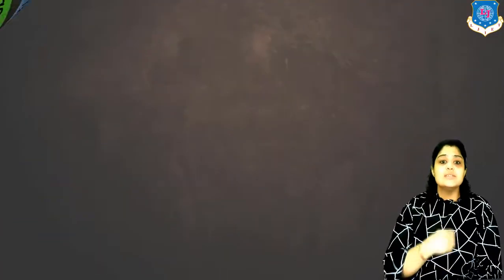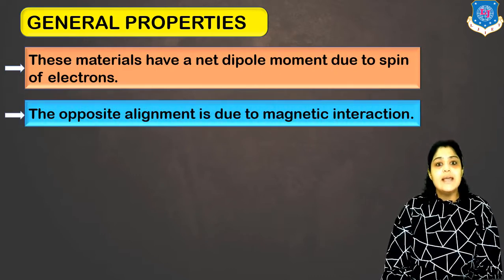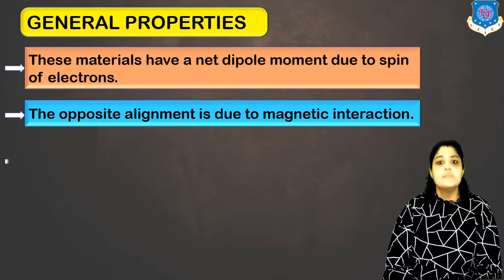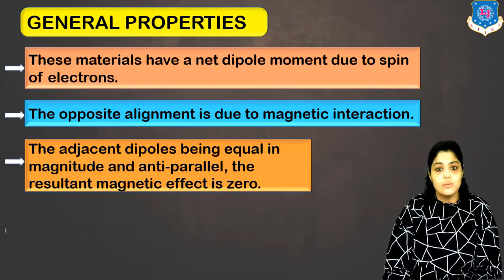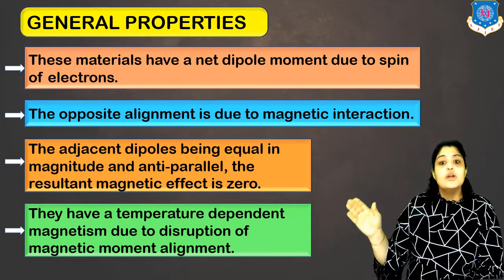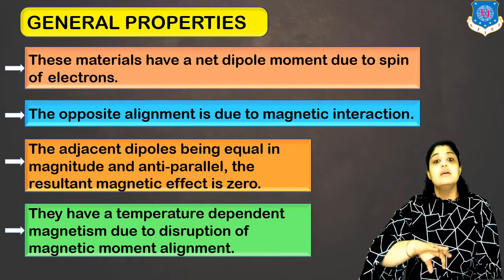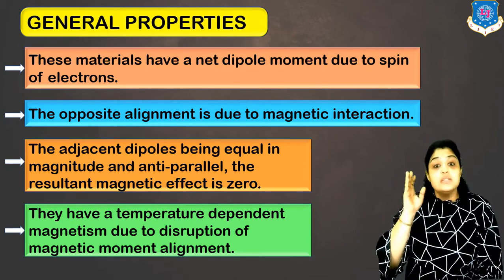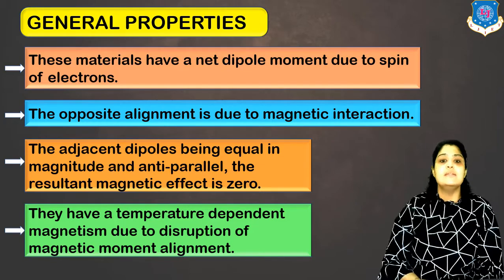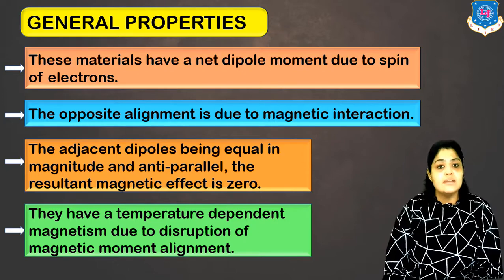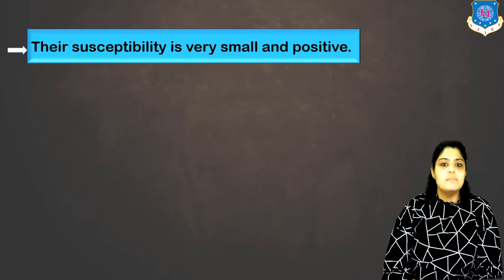So the net magnetization or the net dipole moment in the absence of magnetic field is always zero. Characteristics of anti-ferromagnetic materials: they have net dipole moment due to the spin of electrons. Opposite alignment is due to the magnetic interaction of adjacent dipoles. The adjacent dipoles being the same in magnitude and anti-parallel, the resultant net magnetic field is zero. They have temperature-dependent magnetism due to disruption of magnetic moment alignment.